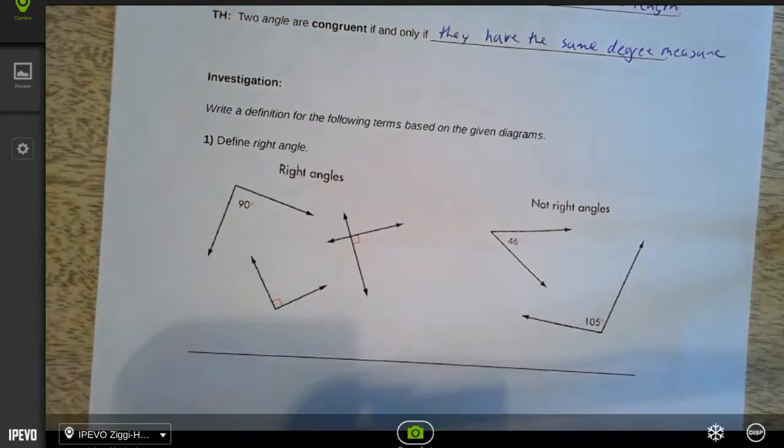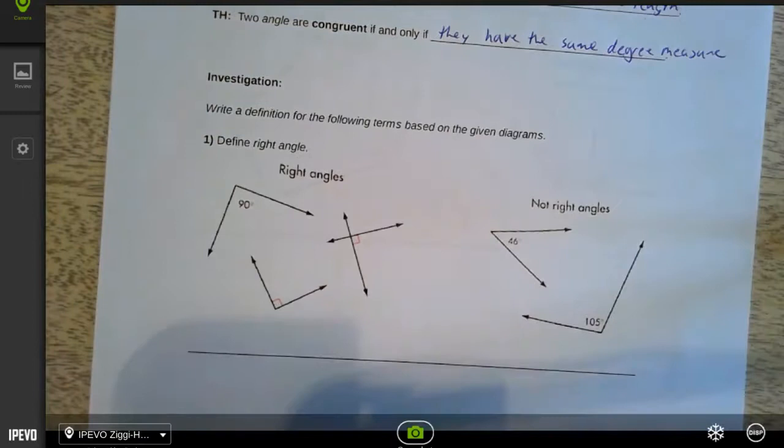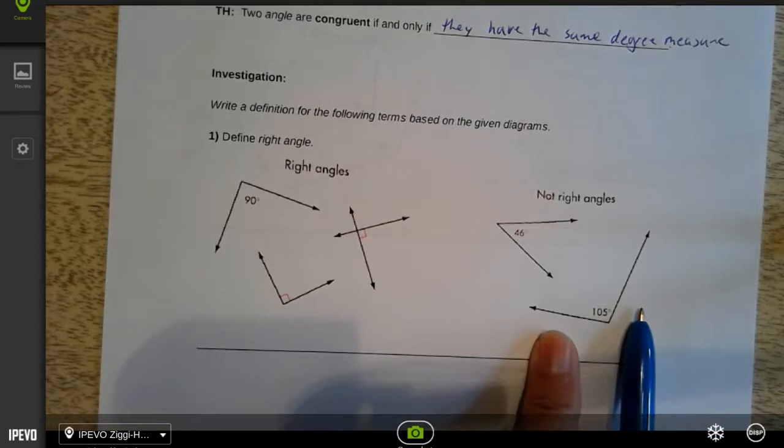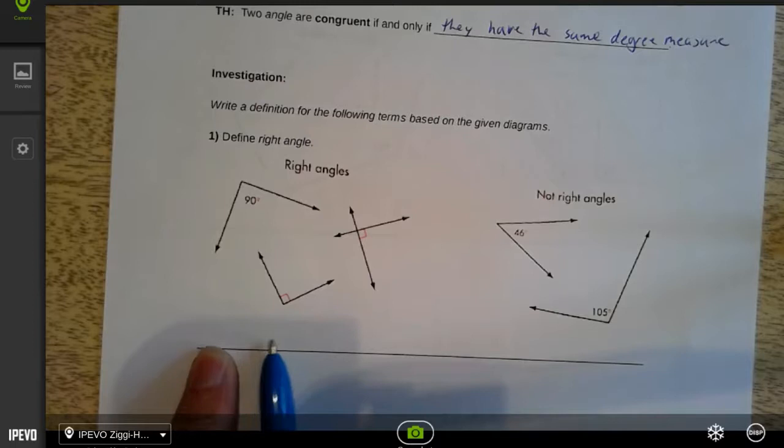You're going to be looking at a lot of things like this - pictures of right angles, pictures of angles that are not right angles. And I want you to write a definition. Work together in your teams. There's a few of these to go through and then we'll go over them at the end of class.